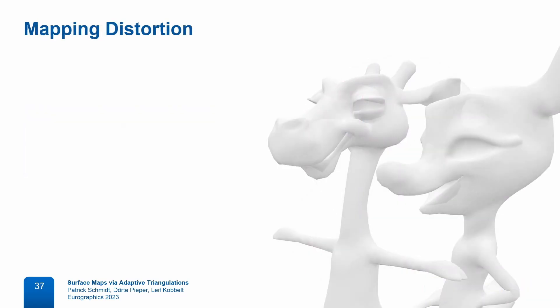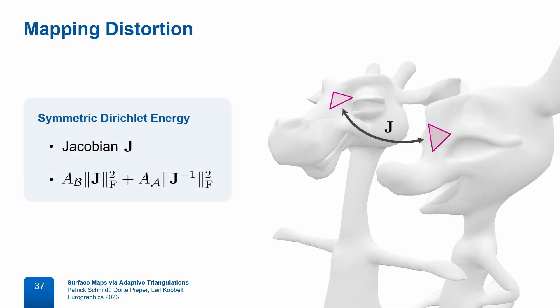Next, we measure mapping distortion between the two approximating triangulations. For each triangle, we lift its vertices from the spheres to the surfaces and then measure the symmetric Dirichlet energy between the two instances. This formulation is flexible — we could use any other distortion measure instead, and it doesn't even have to be flip-preventing because bijectivity is already guaranteed by our barrier term.